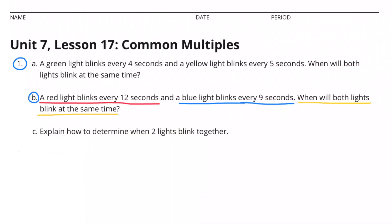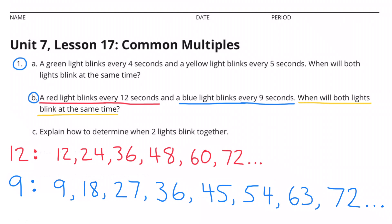B. A red light blinks every 12 seconds, and a blue light blinks every 9 seconds. When will both lights blink at the same time? I made a list of some of their multiples, and now I need to search for the least common multiple.